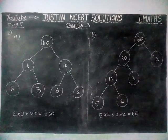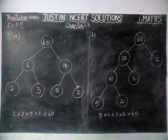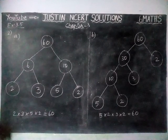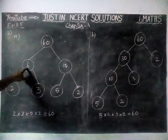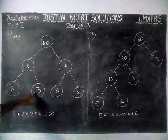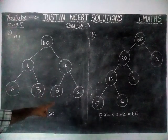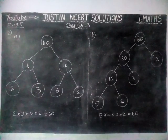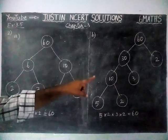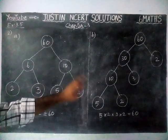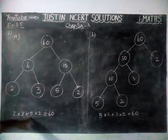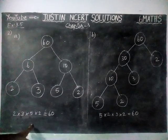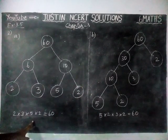So in this sum we saw prime factorization for 60 using both methods — Part A and Part B. In Part A: 6 into 10, then 6 separating into 2 into 3, then 10 into 5 into 2. In Part B: 60 separating into 30 into 2, then 30 into 10 into 3, then 10 into 5 into 2. Both methods give the same prime numbers. This is called prime factorization.